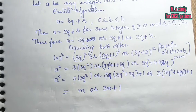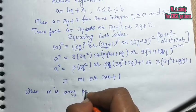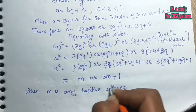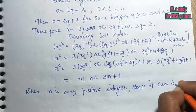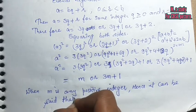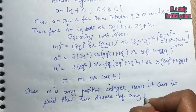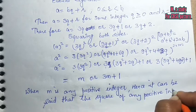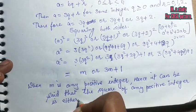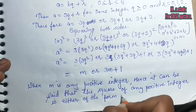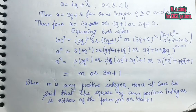Here we have 3q² plus 1. We have 3q² plus 1, which means the square of any positive integer is either of the form m or 3m, 3m or 3m plus 1.